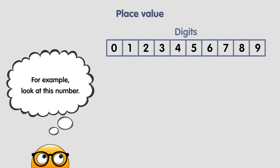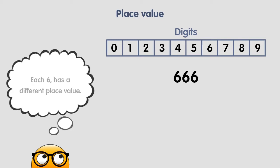For example, look at this number: 666. Three 6's. But don't get confused — each 6 has a different place value.